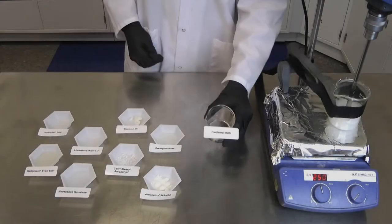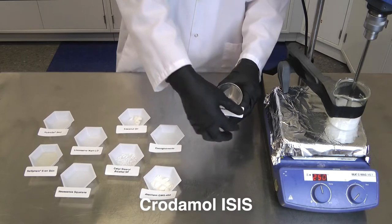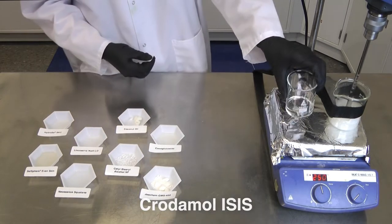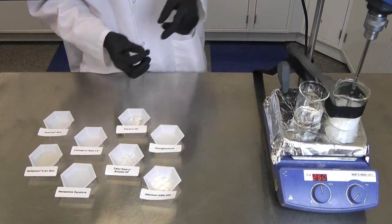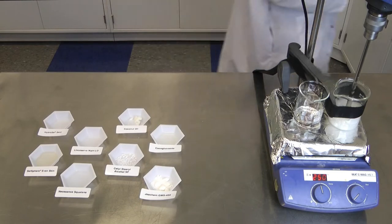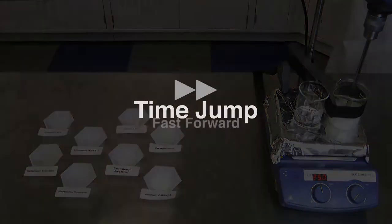Now we will begin to work on our oil phase. The first ingredient is Crotamol ISIS, which is isostearyl isostearate. This is an emollient used to provide a rich feel and improve the spreadability of your final formulation.